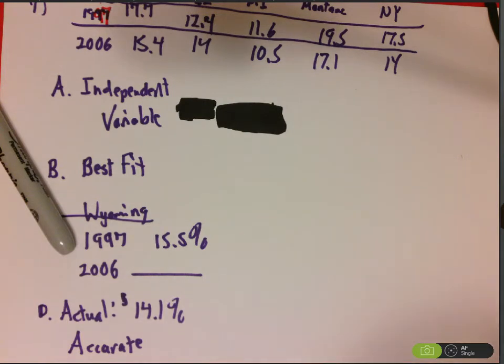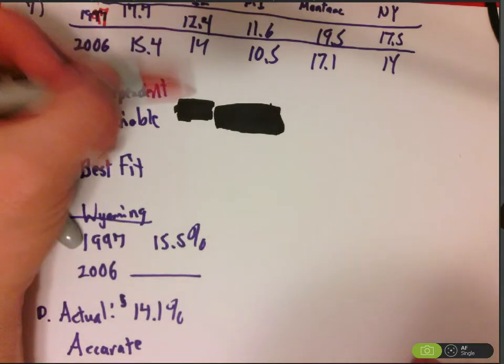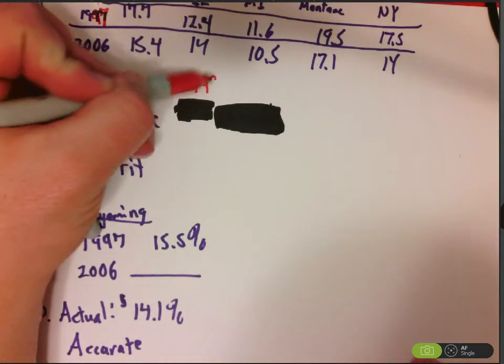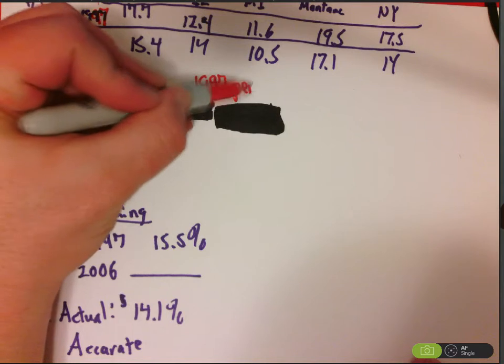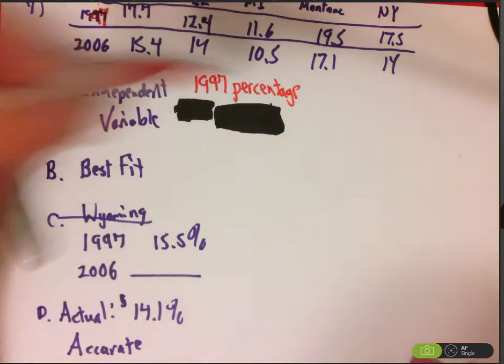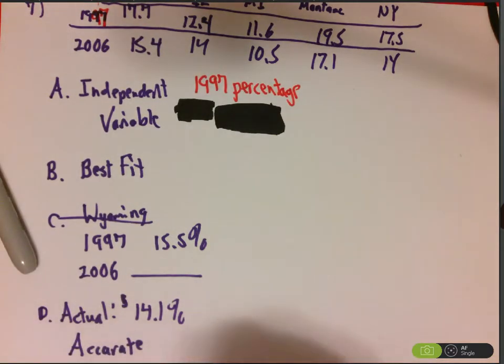Usually in this kind of data, we're going to pick the date that's older so we can see if things have gotten better as we move forward in time or worse. So I'm going to say with pretty much confidence that the independent variable is the 1997 percentage. Because I'm going to say in 2006, the number of people that didn't have health insurance was smaller or greater than it was in 97. So since I'm basing it off 97, that makes it the independent variable.